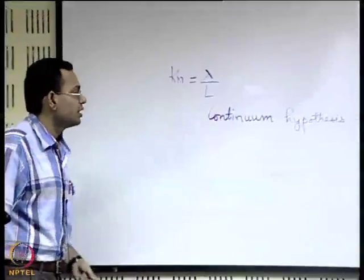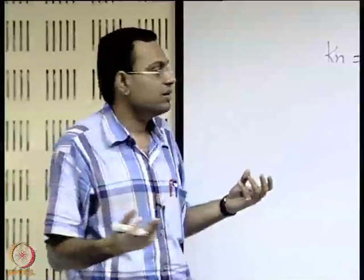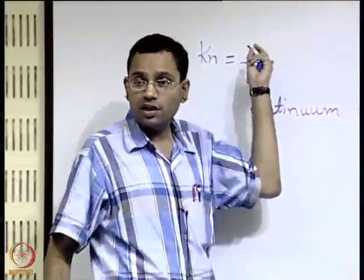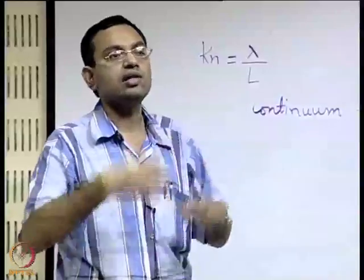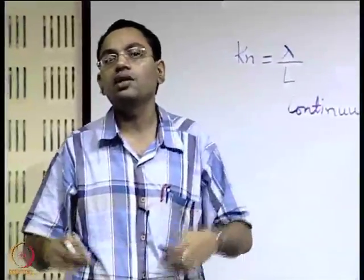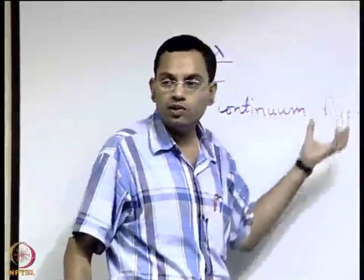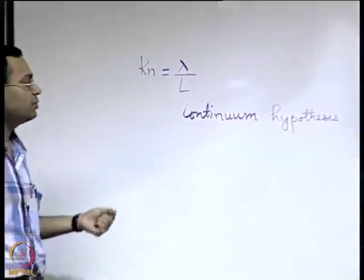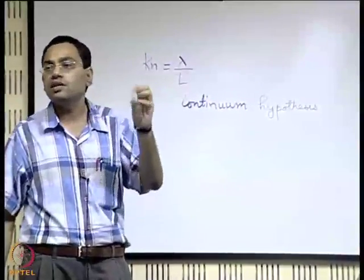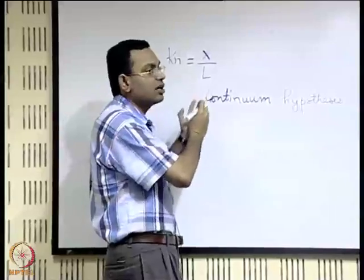If the Knudsen number is greater than 0.1, the mean free path threatens to be 10 percent of the characteristic system length scale, and when it goes larger and larger, there is a stronger and stronger deviation from the continuum hypothesis. Throughout this course, we will be bothered mostly about situations when the continuum hypothesis works — where there are sufficiently large numbers of molecules so that uncertainties regarding individual molecules do not influence predictions about fluid flow, treating the fluid as a continuous matter.